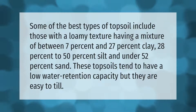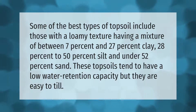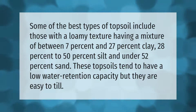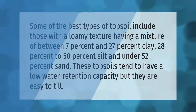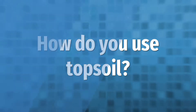Some of the best types of topsoil include those with a loamy texture, having a mixture of between seven percent and 27% clay, 28 to 50% silt, and under 52% sand. These topsoils tend to have a low water retention capacity but they are easy to till.